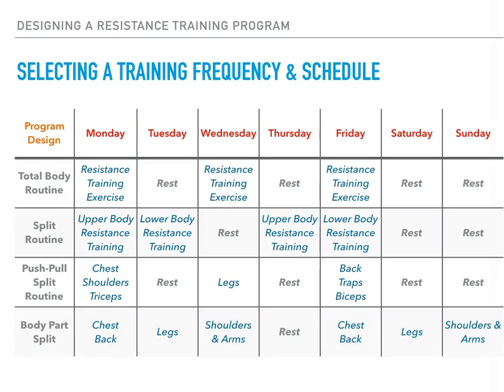This chart showcases some of the formats we can utilize to flesh out the training frequency we select for an individual or group. On the first row, we have a total body routine. In this routine, we're asking an individual — most likely a beginner or someone on the intermediate level — to engage in both upper and lower body resistance training exercises on the same day, between two and three times per week. Notice that the frequency here represents what we outlined earlier, where beginners are engaged in a resistance training program two or three times a week.